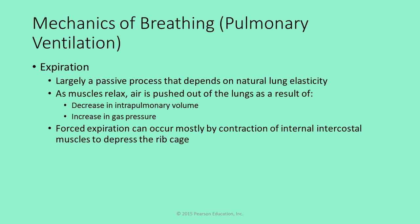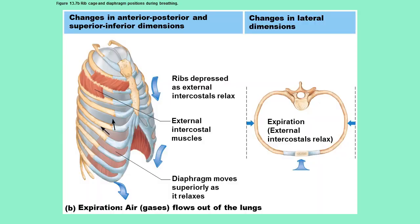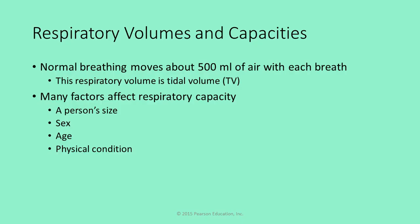If you forcibly exhale, that involves the contraction of your internal intercostal muscles to help push the rib cage down. As you can see in this diagram, the ribs move down and inward, decreasing the volume of the thoracic cavity and increasing the pressure.